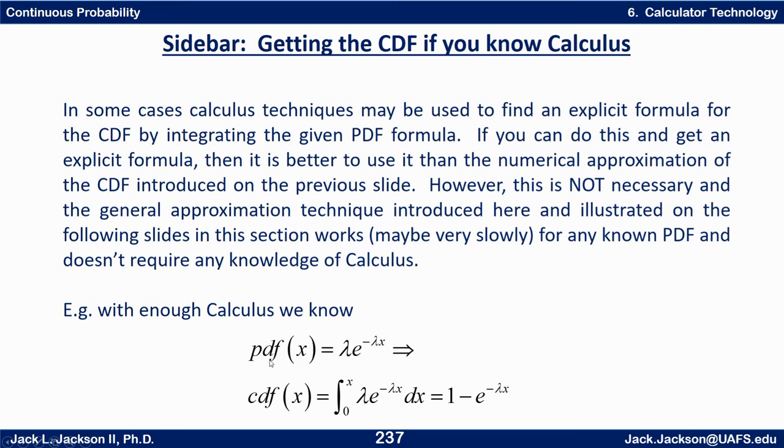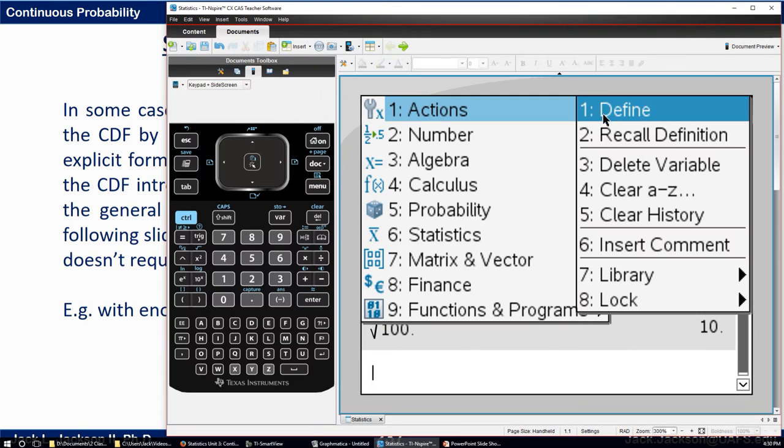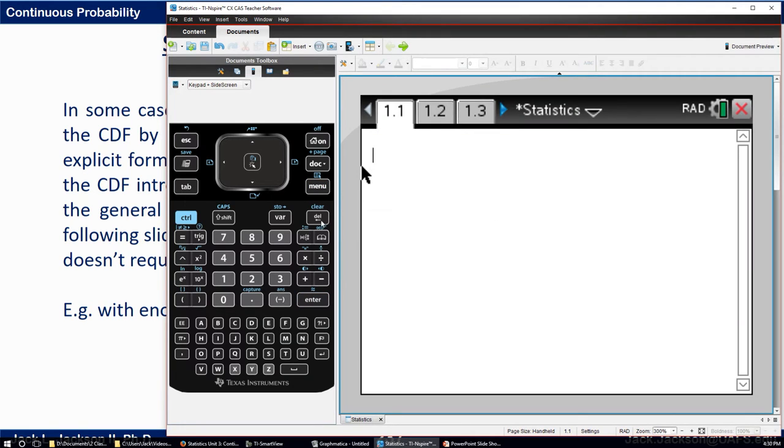So for example, with enough calculus, we know that if the PDF is lambda times e to the minus lambda x, the CDF, and this applies from zero on. So the CDF is then zero for the integral from zero to x of lambda e to the minus lambda x dx. It turns out that that is the formula one minus e to the minus lambda x. By the way, if you have an inspire CAS, even if you don't know calculus, you can get it to tell you that formula. Let's look at this. Let me clear this out.